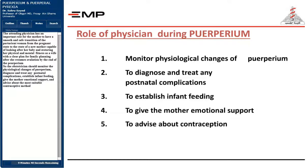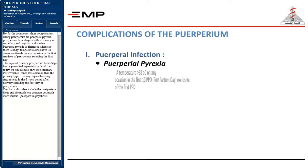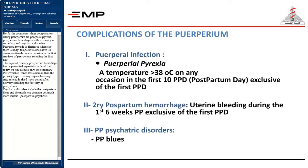The obstetrician should monitor the physiological changes of puerperium, diagnose and treat any postnatal complications, establish infant feeding, give the mother emotional support, and advise about the most suitable contraceptive method. By far, the commonest three complications during puerperium are puerperal pyrexia, postpartum hemorrhage whether primary or secondary, and psychiatric disorders.